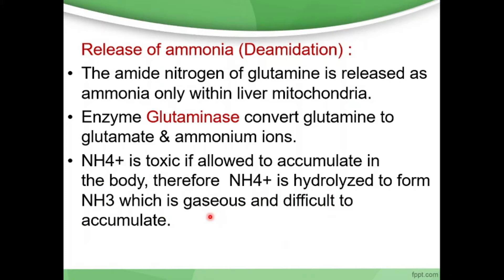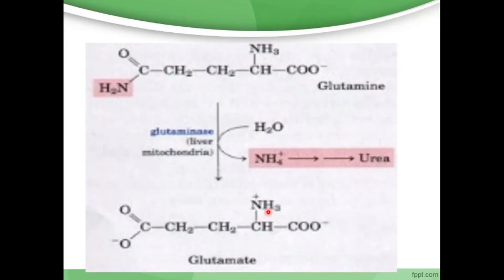The accumulation of NH4+ is easy and it is toxic, therefore it is hydrolyzed and ammonia is released. Gases are difficult to accumulate, whereas the non-gaseous form is easy to accumulate. So it is hydrolyzed, and the ammonia which is released is converted into urea. This is the process: glutamate and glutamine are involved, ammonia is released, and the NH4+ form is hydrolyzed.